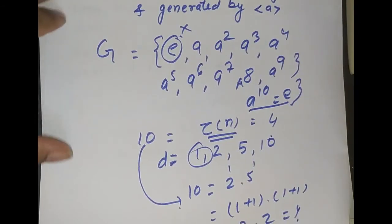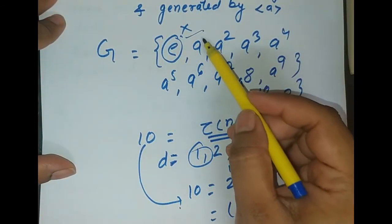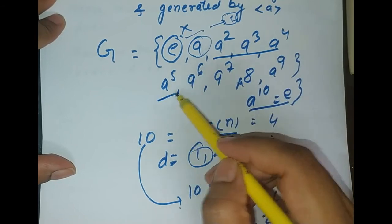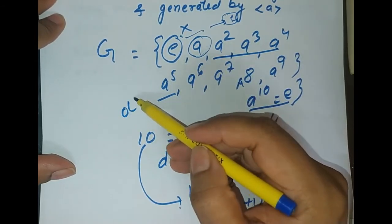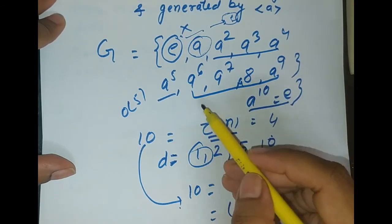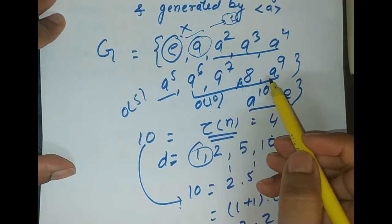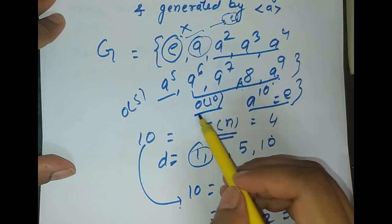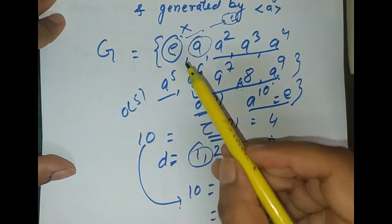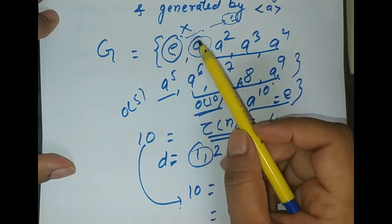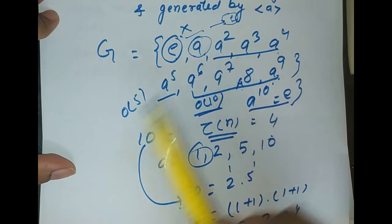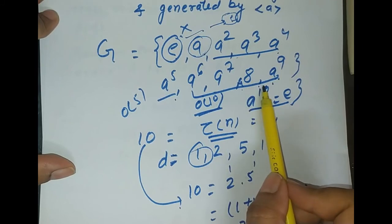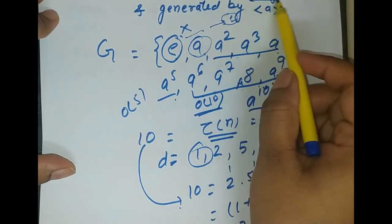So the structure of the group of order 10 is clear: one element of order 1 (identity), one element of order 2, four elements of order 5, and four elements of order 10. The elements of order 10 are the generators of this cyclic group. This gives us the complete structure of the group.